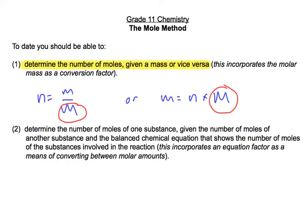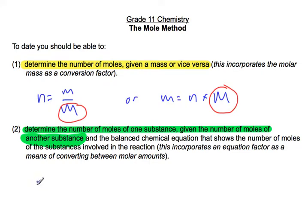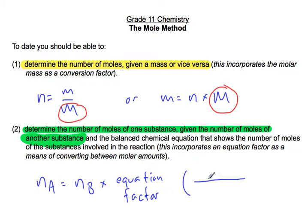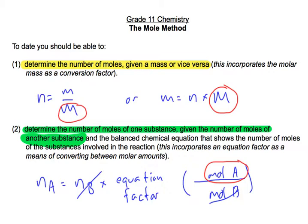The other thing you have to be able to do is determine the number of moles of one substance given the number of moles of a different substance in that chemical equation. To do that, we use equation factors. If we're looking for moles of A and we're given moles of B, we multiply by our equation factor — a ratio of moles of A over moles of B from the chemical equation — so moles of B divide out and we're left with moles of A.